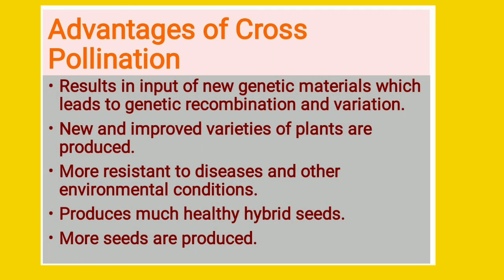Advantages of cross pollination: these help the plant with prevention of inbreeding depression. The first advantage is that cross pollination results in input of new genetic material — as the flowers are genetically different though they belong to the same species, cross pollination plays a very important role in bringing about genetic recombination and variations among plant species. The second advantage is that new and improved varieties of plants are produced because of recombination of newer characters.